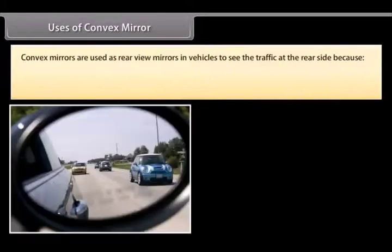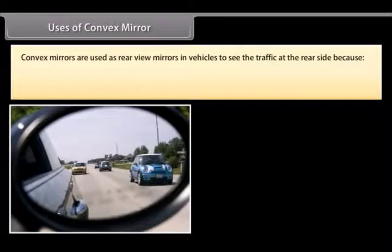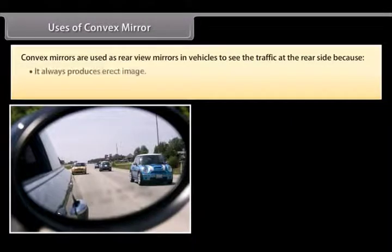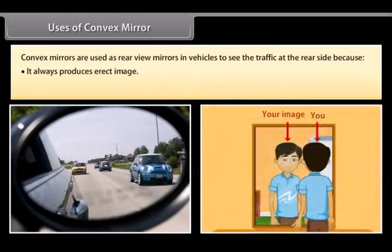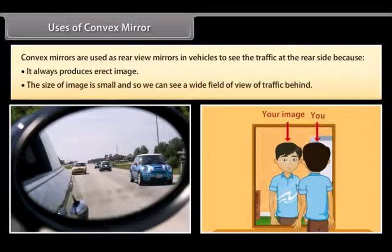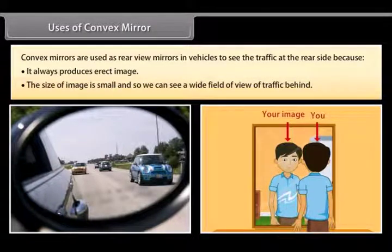Uses of convex mirrors: Convex mirrors are used as rear-view mirrors in vehicles to see traffic at the rear side, because they always produce an erect image, the size of the image is small, and so we can see a wide field of view of traffic behind.